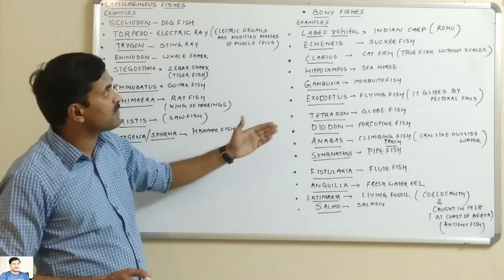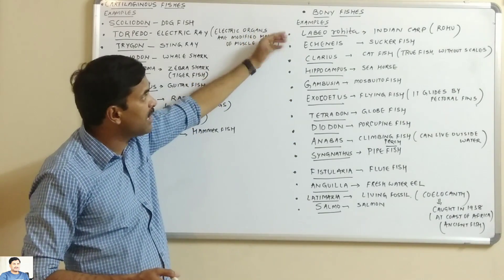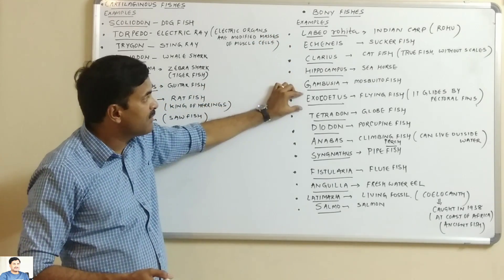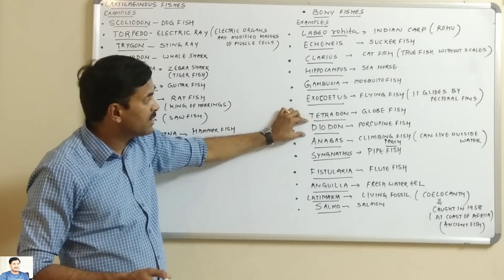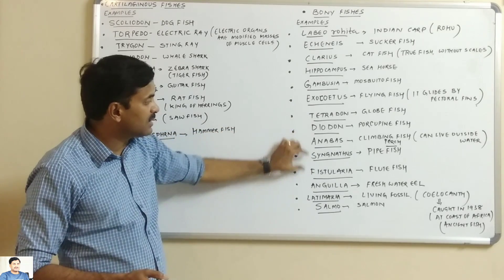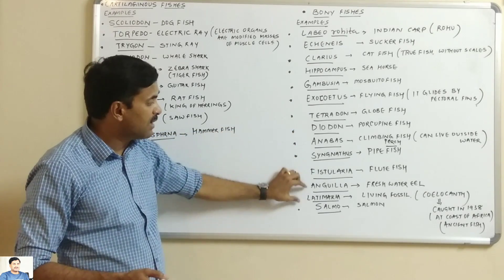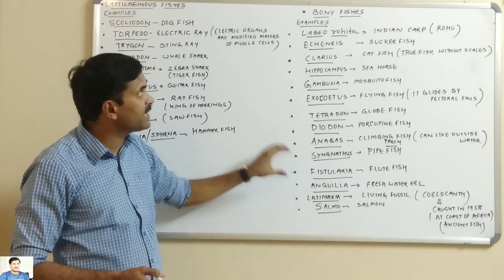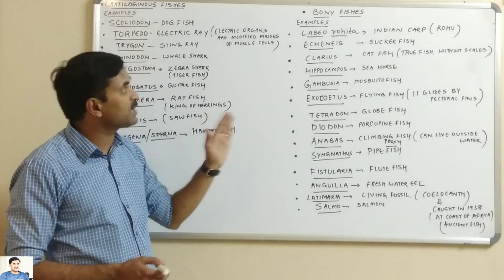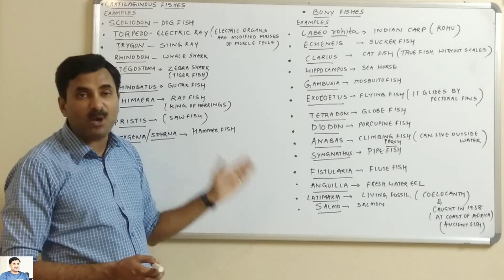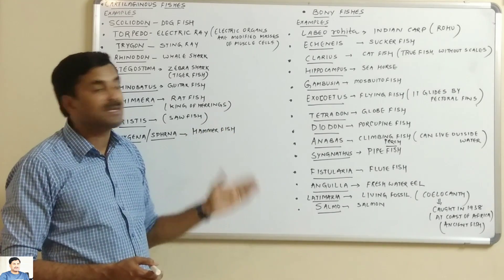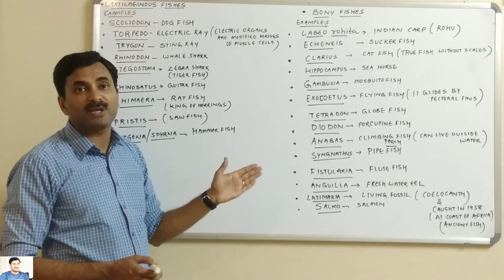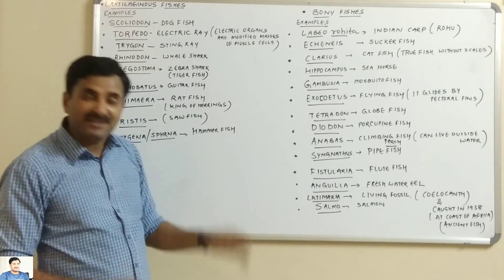Once again, the examples of bony fishes: Labeo rohita, Echeneis, Clarias, Hippocampus, Gambusia, Exocoetus, Tetrodon, Diodon, Anabas, Syngnathus, Fistularia, Anguilla, Latimeria, and Salmo. So dear students, this video was based on the comparative account of the cartilaginous fishes and the bony fishes along with their examples. It will be important for your examination. Thanks a lot.